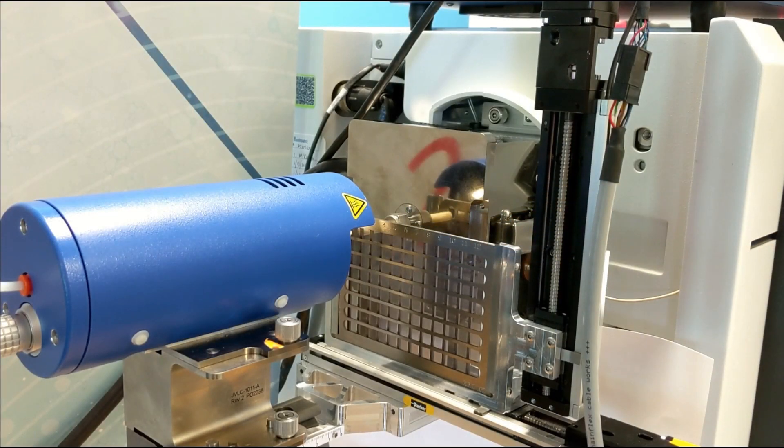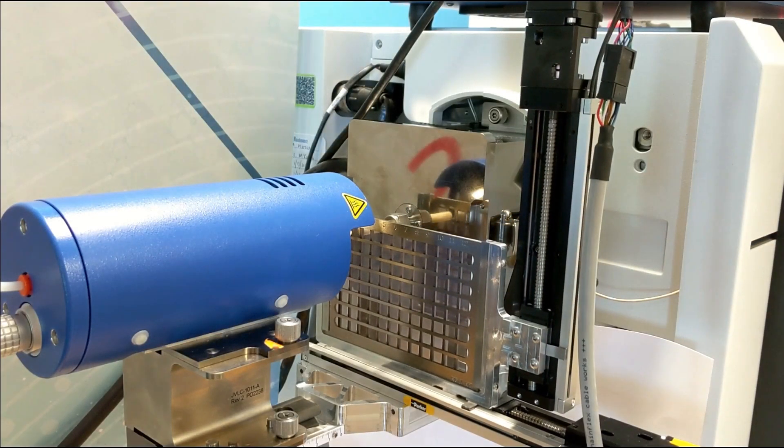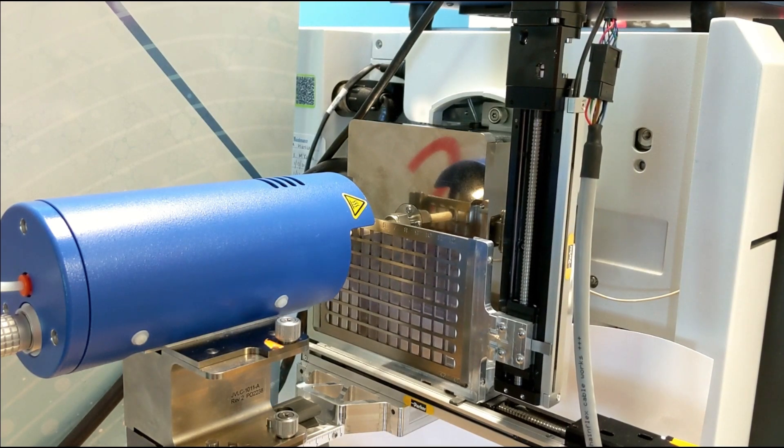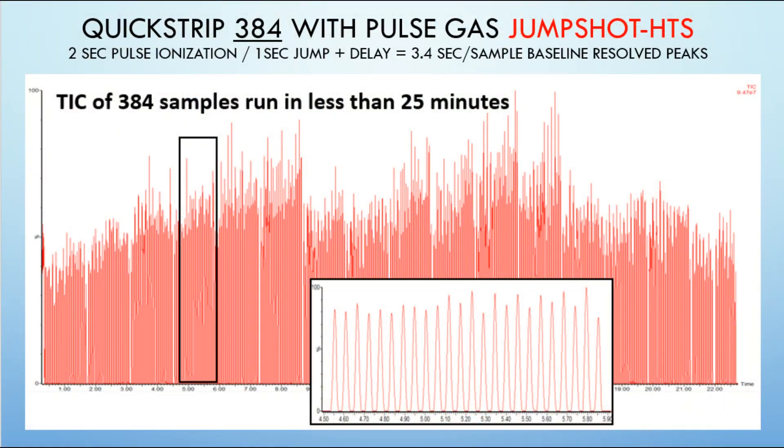This pulsing combined with our new linear rail automation hardware has increased our analysis speed, as it permits analysis of 96 samples in just 6 minutes, or as shown here, 384 samples in 22 minutes.